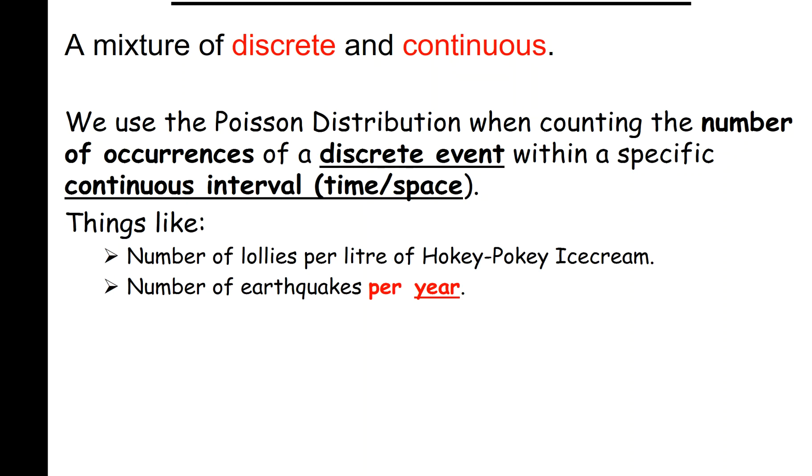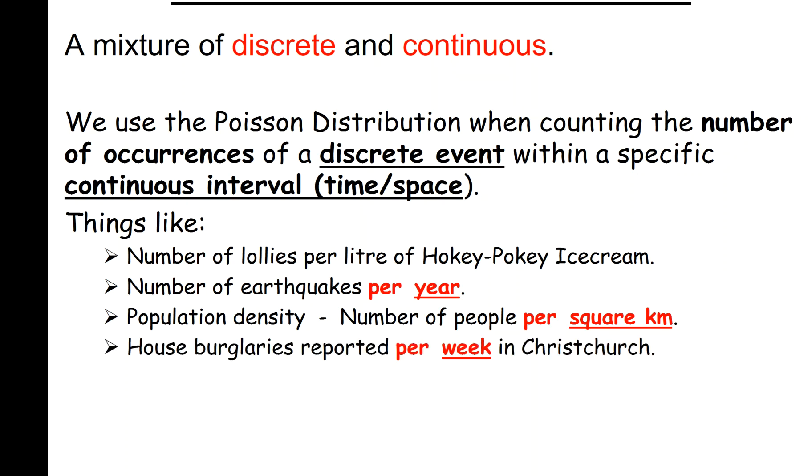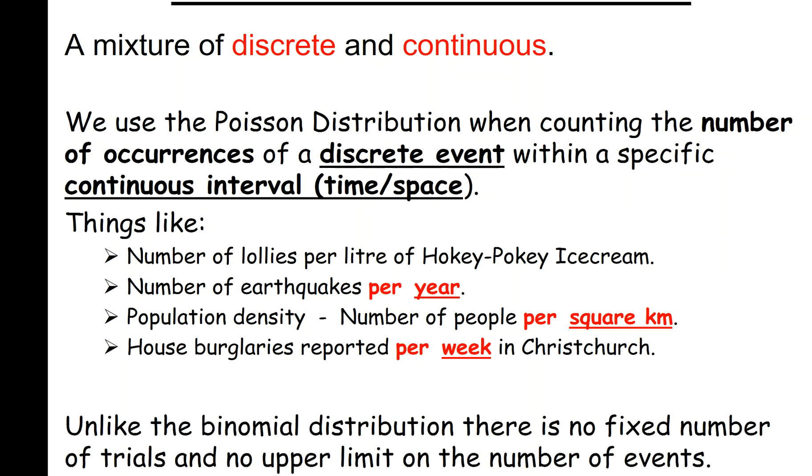Population density, which is the number of people per square kilometer, house burglaries reported per week in Christchurch. Unlike the binomial distribution, there's no fixed number of trials and no upper limit, because it's in an interval - an interval of time or an interval of space.